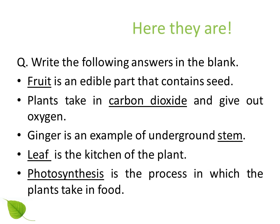Here are the answers. Fruit is an edible part that contains seed. Plants take in carbon dioxide and give out oxygen. Ginger is an example of an underground stem. Leaf is the kitchen of the plant. Photosynthesis is the process by which plants make food.